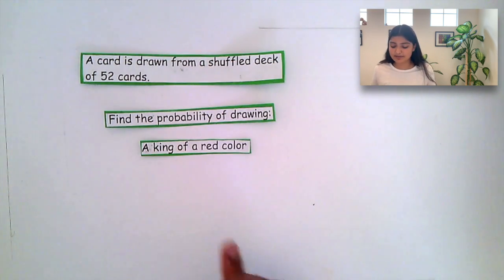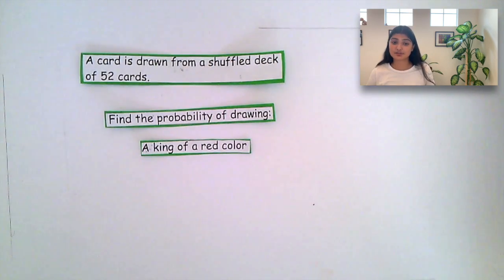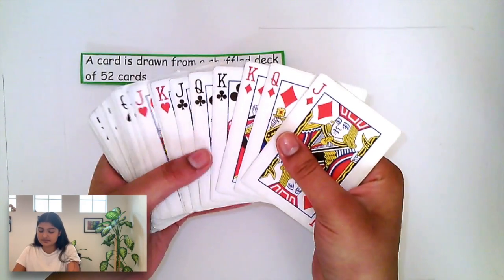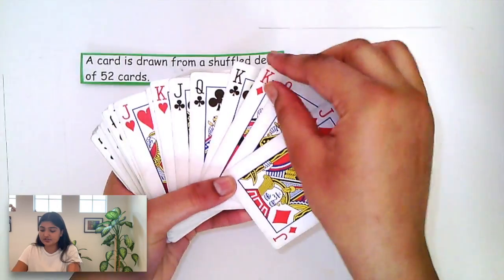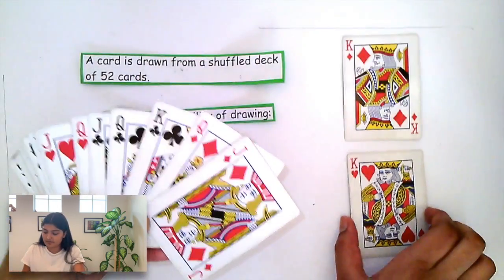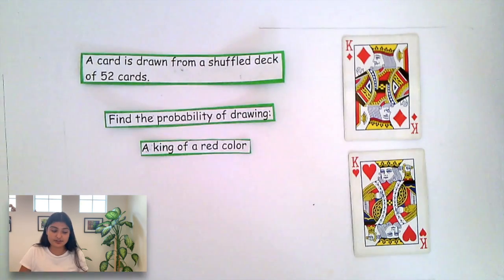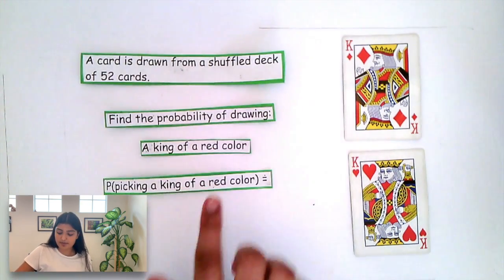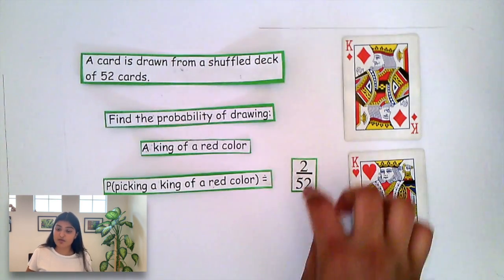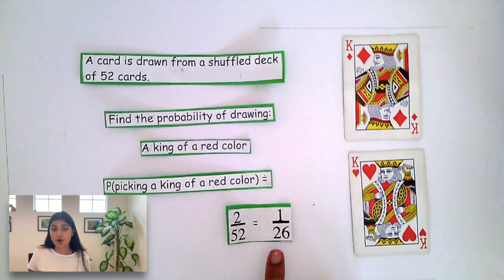But what's the probability of drawing a king of a red color? Let's go back to our deck. As we can see, there are only 2 kings that are of a red color, which are the diamond and the heart. There are 2 out of 52. So we know that the probability of picking a king of a red color would be 2 over 52, which can also be simplified to 1 over 26.